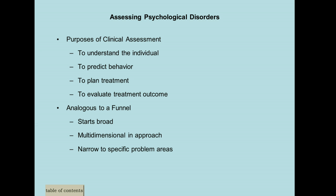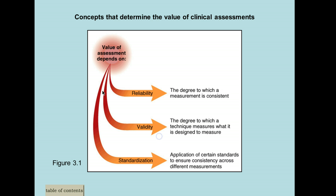A good step in obtaining an accurate diagnosis is doing a psychological assessment. We're going to talk about a few psychological tests. One thing they all have in common is that they stand the test of rigor — meaning they're reliable, they're valid, and they've been standardized. There has to be a high standard for psychological tests, and all of these tests meet that standard.